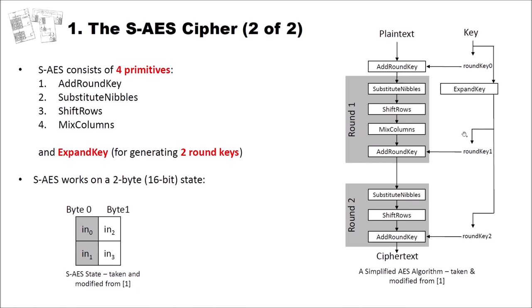SAES works on a two-byte, 16-bit state. Byte zero goes into the cipher as nibble one and nibble two — a nibble being four bits of a byte. It's important to have a look at SAES in that way. Byte one also goes into the cipher. This state will be modified as you go through the cipher by the different primitives.